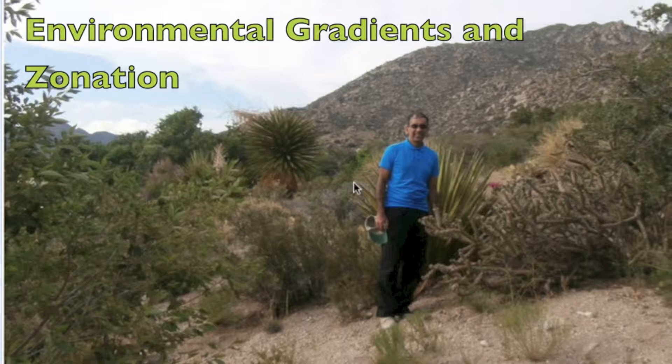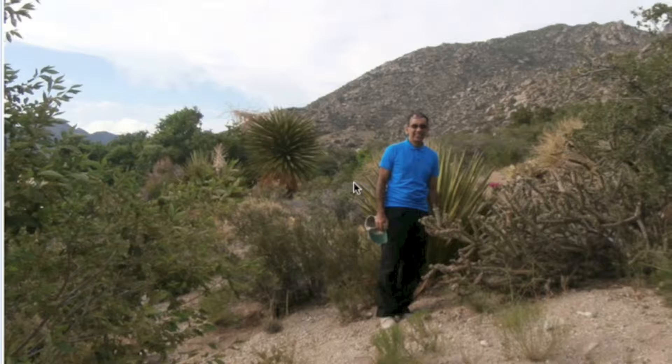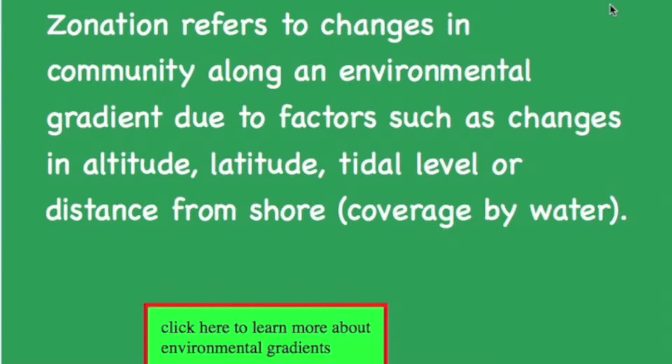Welcome again. Today we've come to Albuquerque, New Mexico in the southwestern United States to take a look at environmental gradients and zonation. Here you can see in the background the Sonoran Desert at the foothills of the Sandia Peaks. We're about to take a journey by tram car all the way up to the top — about 7,000 feet or 2,300 meters above sea level. But first, let's recall that zonation refers to changes in community along an environmental gradient due to factors such as changes in altitude, latitude, tidal level, or distance from shore covered by water.